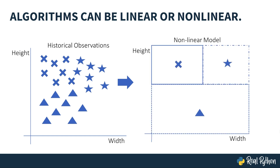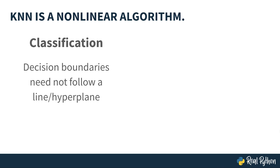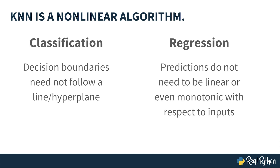If you train a non-linear model, however, you will likely end up with more complicated classification boundaries. For example, you might create a decision tree model that says: if a point's height is low, it's predicted to be a triangle; if the height is high and the width is low, it's a cross; otherwise, the point is a star. KNN is a non-linear algorithm — for classification problems, it can make more complicated decision boundaries that don't necessarily follow lines or hyperplanes, and for regression, its predictions don't need to follow linear or even monotonic relationships.